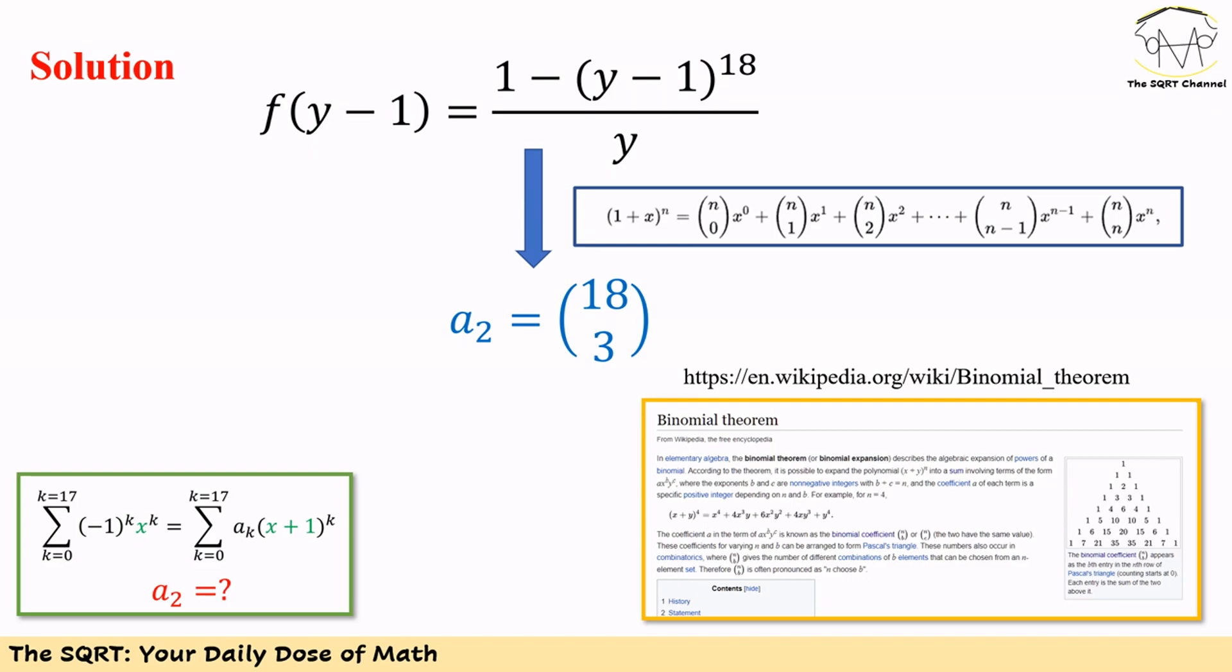So to find what we have for a_2, we need to find the coefficient that we have for y to the power of 3. Since we already have y in the denominator of f of y minus 1, the coefficient that we have for y to the power of 3 is going to be 18 choose 3. So 18 choose 3 is going to be our answer.